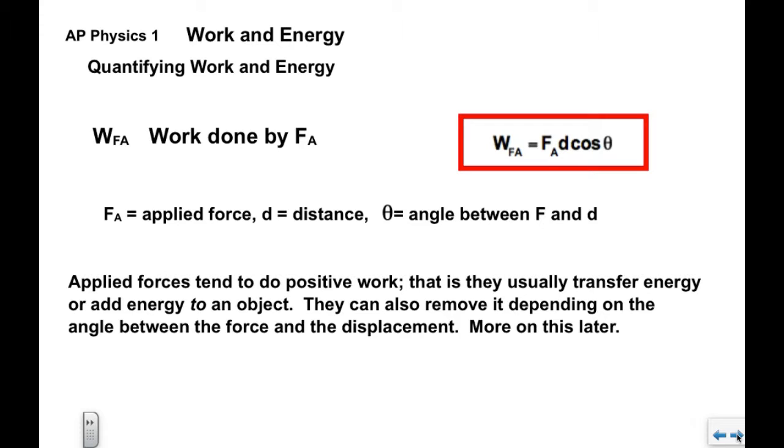We have the work done by an applied force F A. The work done is F A times d times the cosine of theta. F A is the applied force, d is the distance or the displacement, and theta is the angle between the vectors F A and d.